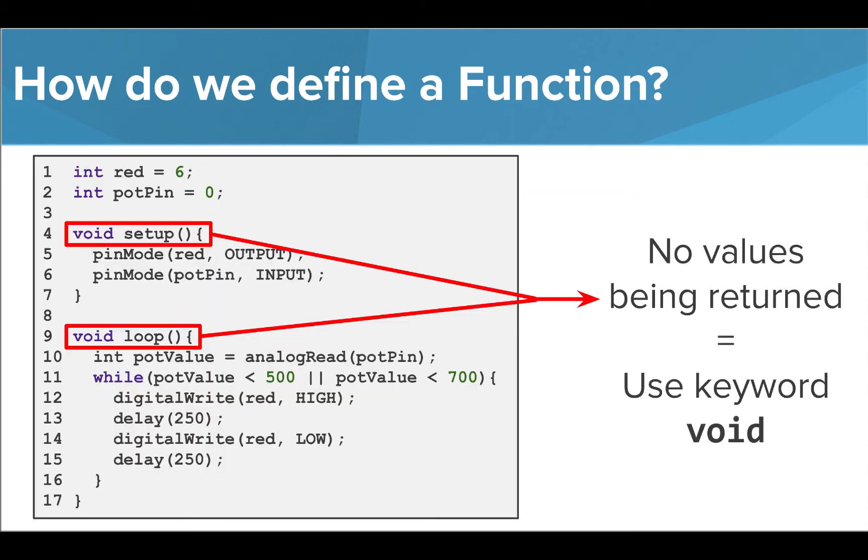You'll note that our setup and loop functions use the keyword void before the function name. This is because these functions are not returning any values to be used in another part of our program.